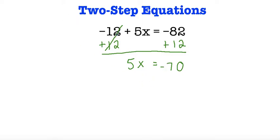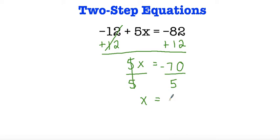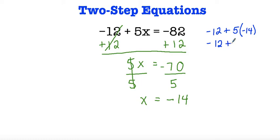In order to get x by itself, I have 5 times x is equal to negative 70, so I'd have to divide both sides by 5. 5 divided by 5 is 1, and 1x is the same thing as x, is equal to negative 70 divided by 5. This is a negative and this is a positive, and a negative divided by a positive is a negative, so negative 70 divided by 5 is negative 14. If I wanted to check my work, I'd substitute for x: negative 12 plus 5 times negative 14 is negative 70, and negative 12 plus negative 70 is negative 82. So I know my answer is right.